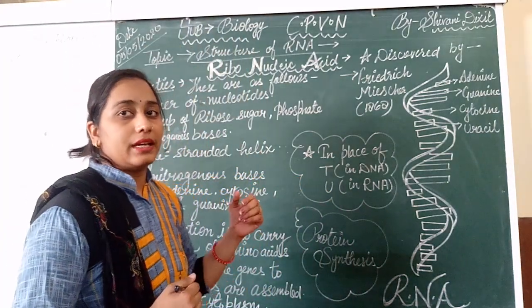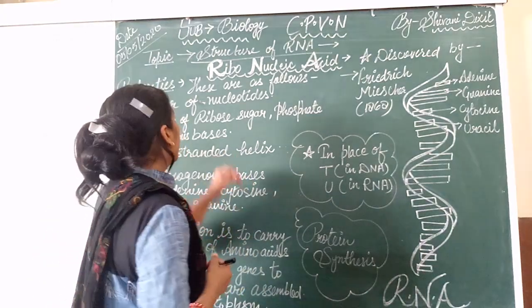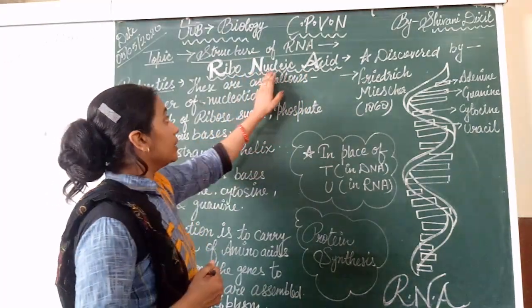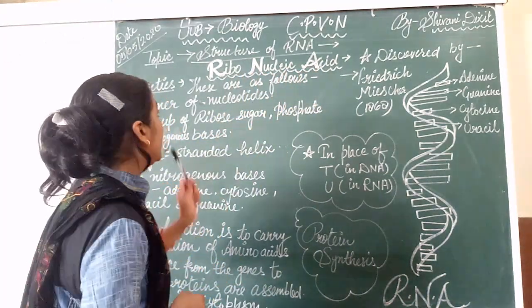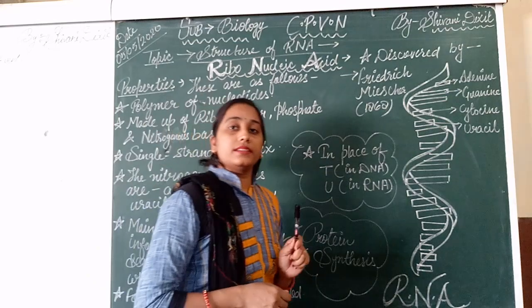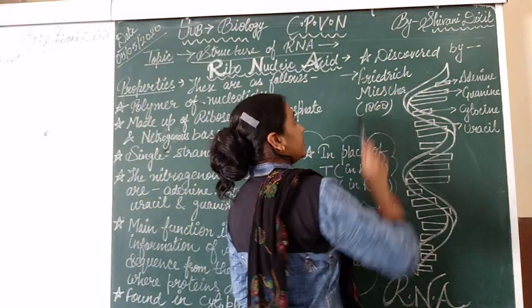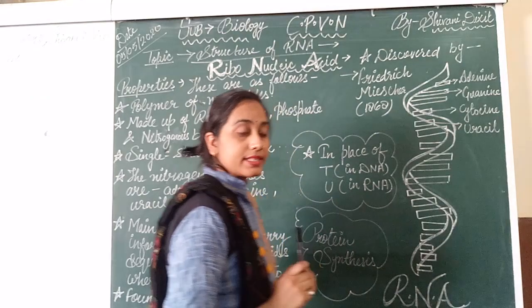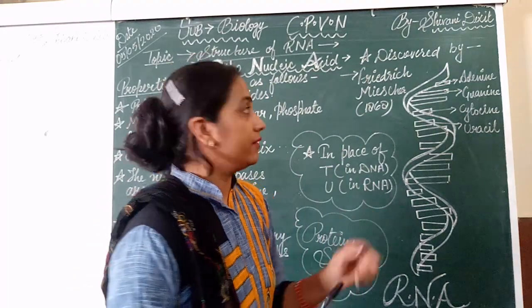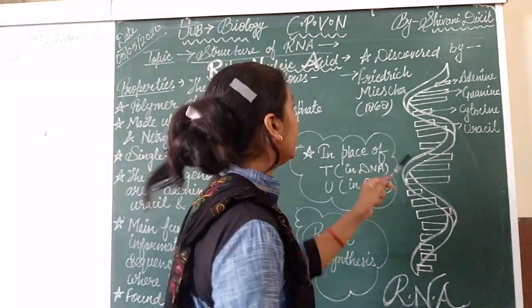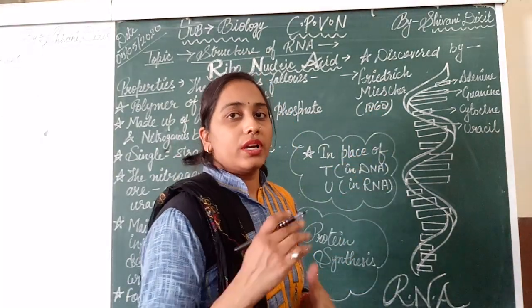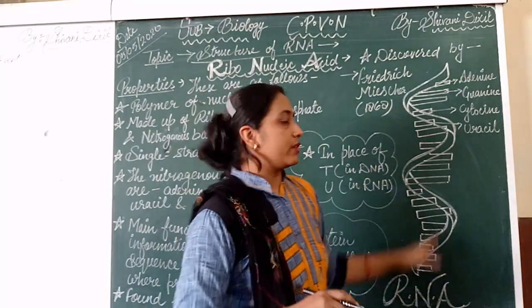The first thing that arises in our mind is: what is RNA? RNA stands for ribonucleic acid. As I told you, the DNA model was given by Watson and Crick, and RNA was discovered by Frederick Weiser in 1868.